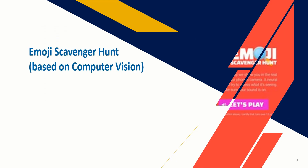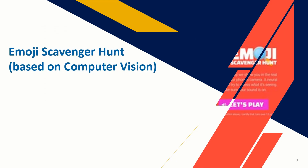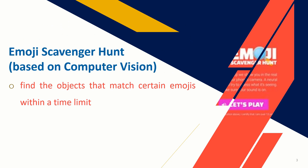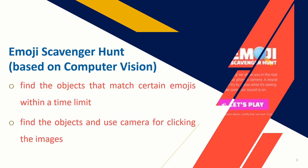Let us now try to play the third game, which is Emoji Scavenger Hunt. This game is based on Computer Vision, where the machine initiates the game by showing an emoji. We have to find objects that match the emojis within the time limit. We can use a cell phone or a laptop, or draw the object on paper and show it in front of the camera — it's up to us how to play this game.